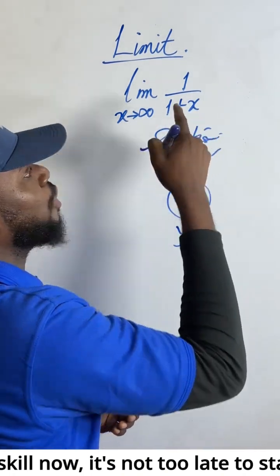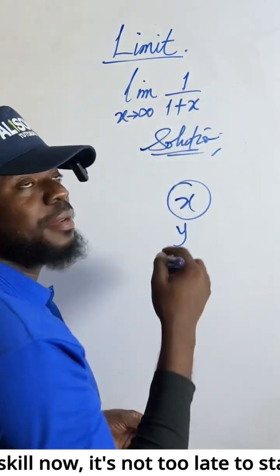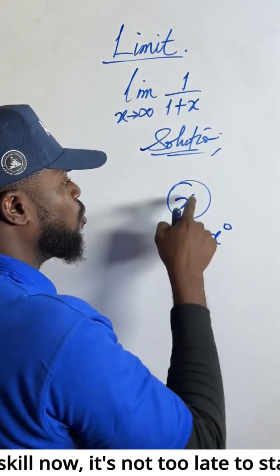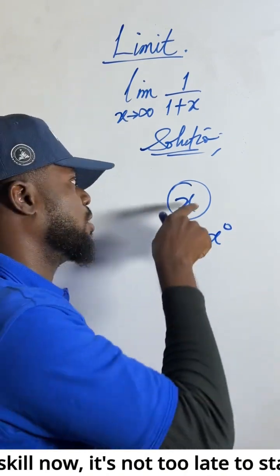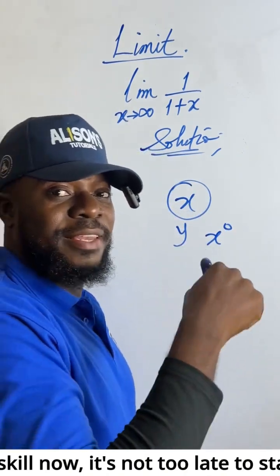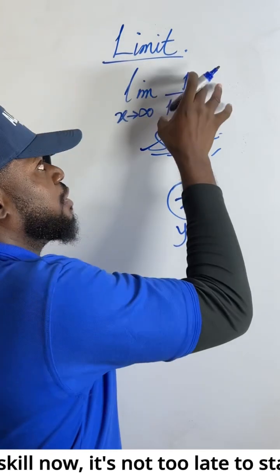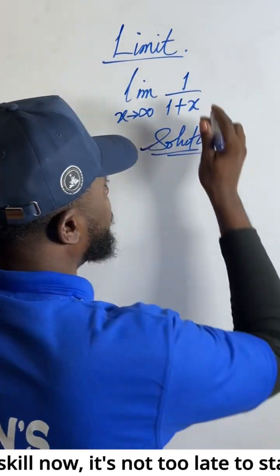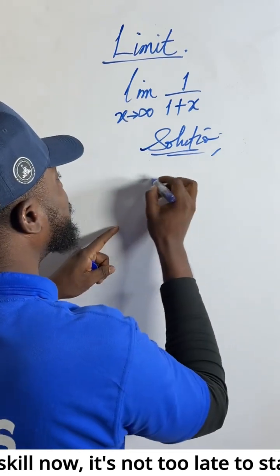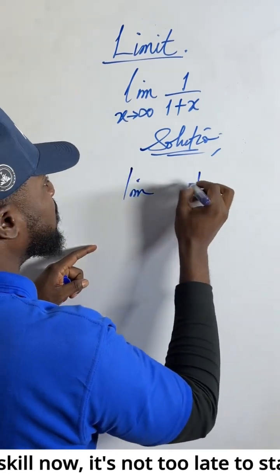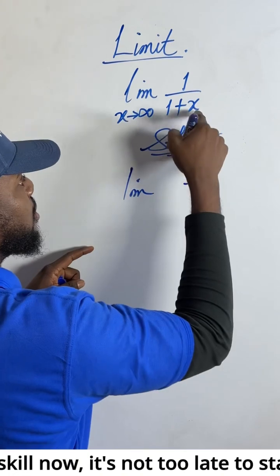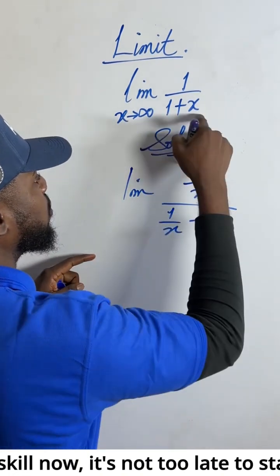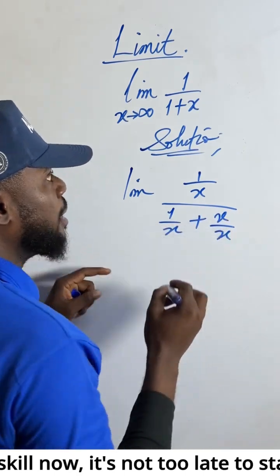So I need to identify the highest power. Like x to the power of one — that's the highest power. This constant, even if you replace it as x to the power of zero, x to the power of one is bigger. So x to the power of one is the highest power of the independent variable present in this particular equation. So we divide the numerator by one over x, and also divide the denominator: one over x plus x over x.